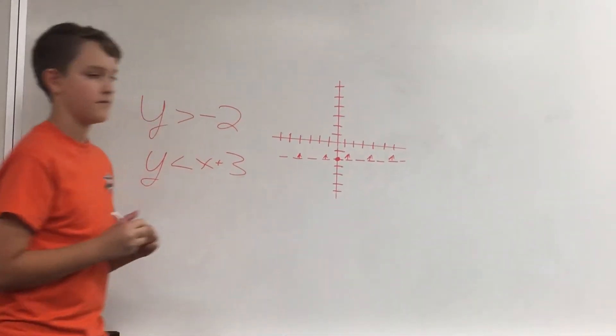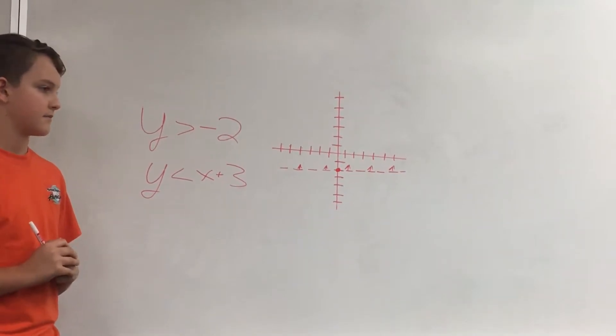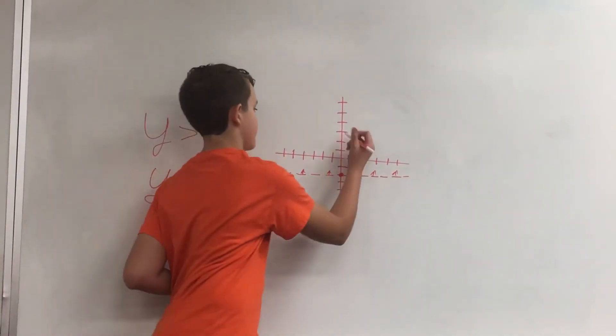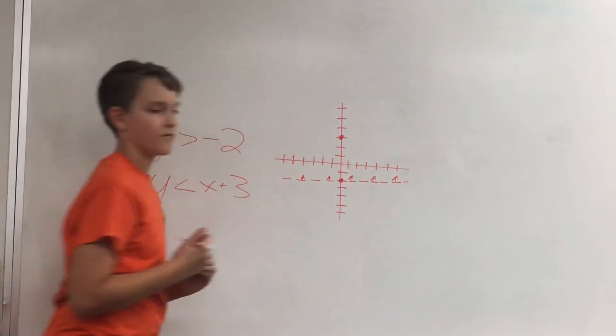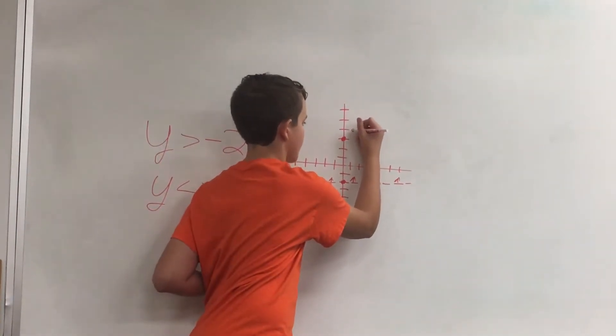Then you figure out the second problem. Step 2. First, plot your y value, 3. Then you have to go up 1 over 1. Then you go down 1 over 1.